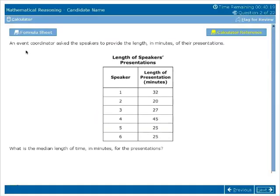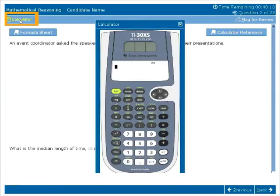When you are taking the GED mathematics test on the computer, in order to use the calculator, click the calculator button in the top left corner of the screen. The calculator will open in a separate window.